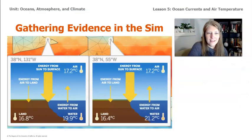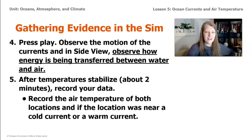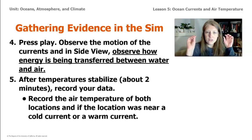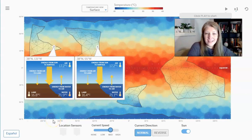Go ahead and run the SIM for about two minutes. After you're done, record the temperature of the air. It's important to record the air temperature for both locations, and also record whether each location was next to a cold current or a warm current. Go ahead and get on the SIM yourself, explore it — hit play, set yours up the same way, and see what kind of data you get.